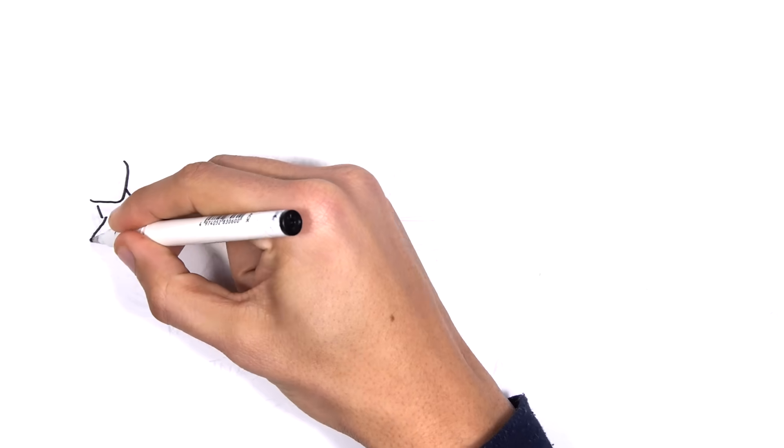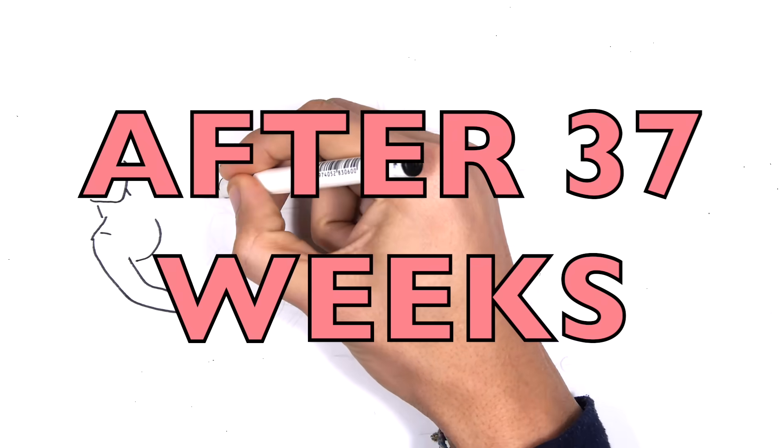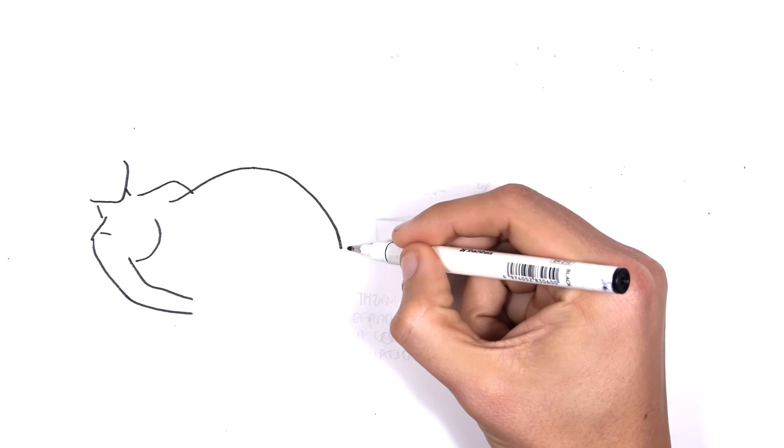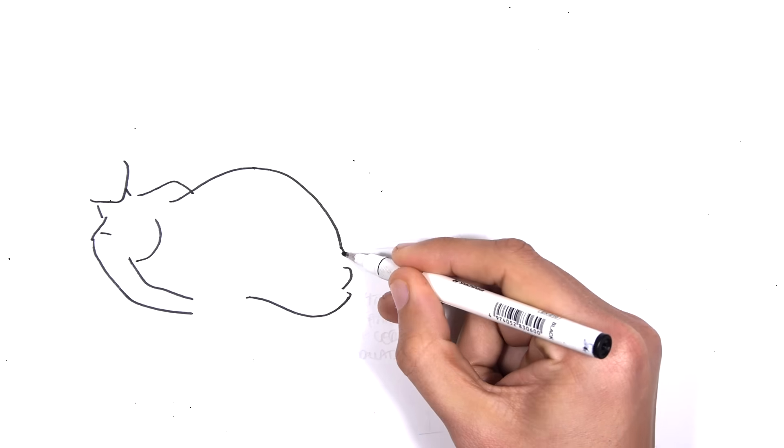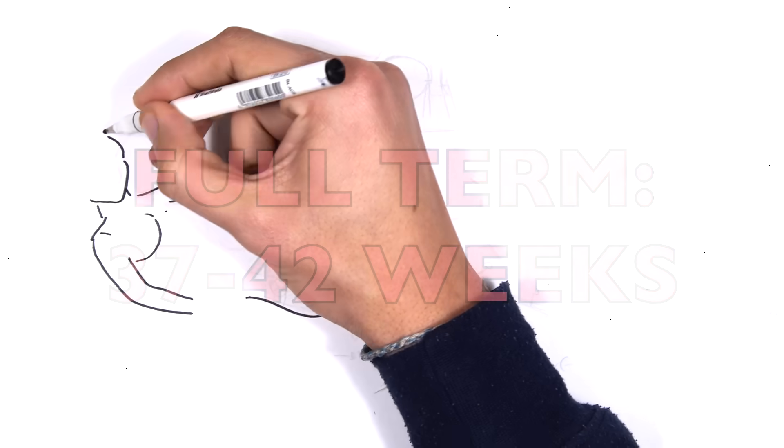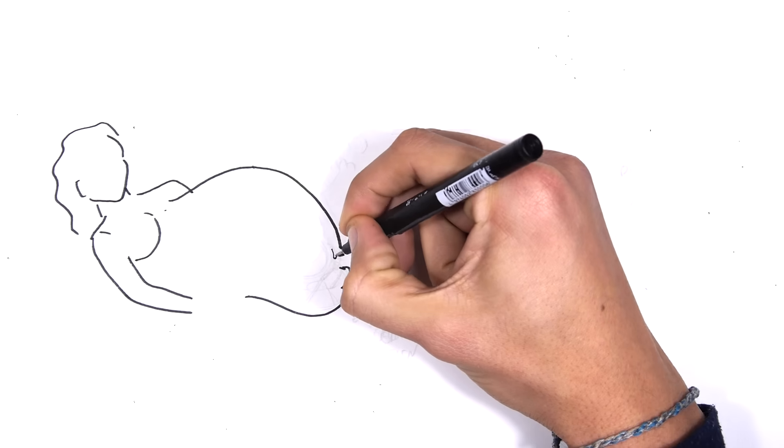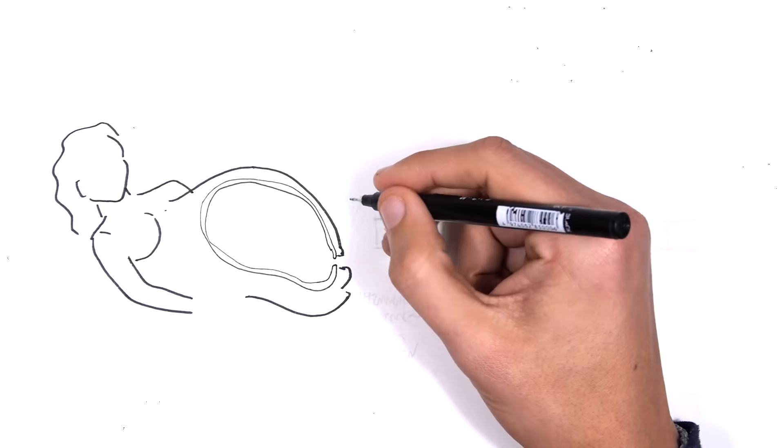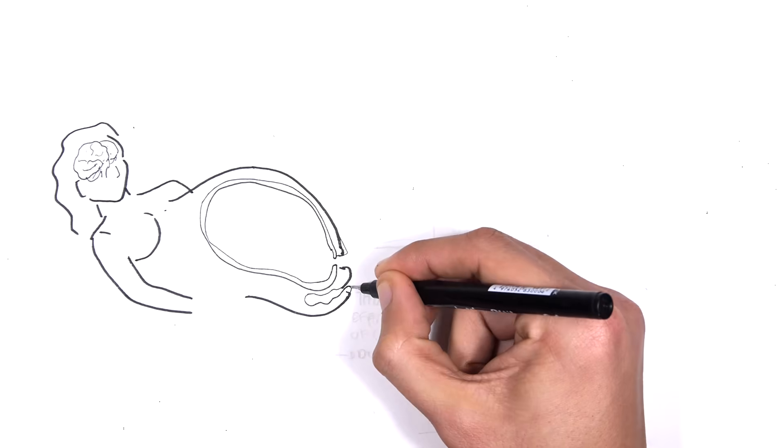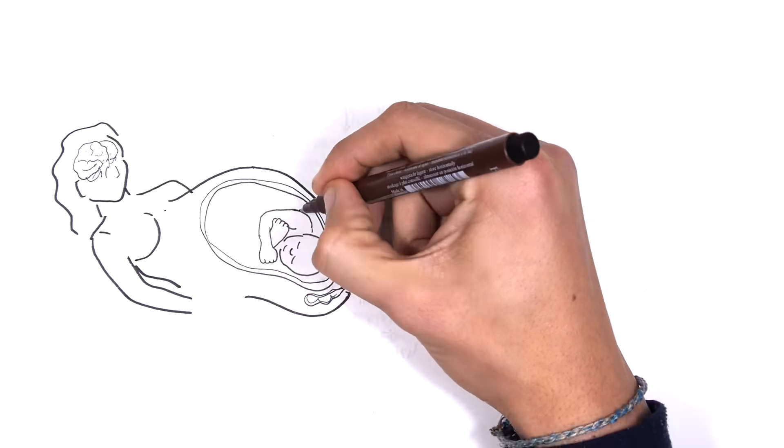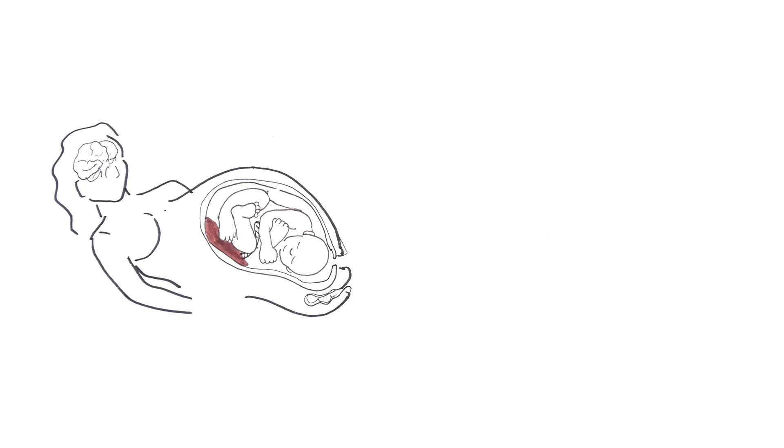First let us recap the physiology and some terminologies. Normal labor usually occurs after 37 weeks. A full-term birth refers to delivery occurring between 37 to 42 weeks gestation. But during certain circumstances, labor might occur before 37 weeks. If it's before 37 weeks, we call this premature labor.